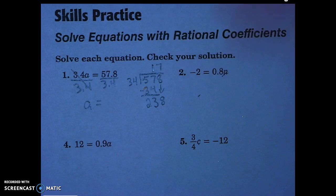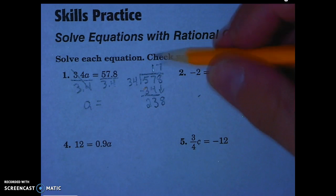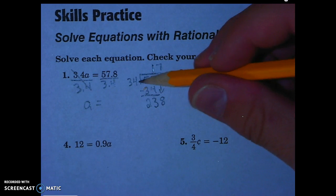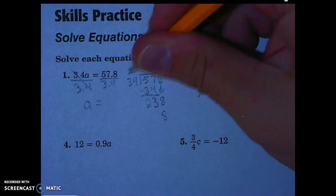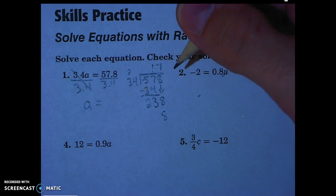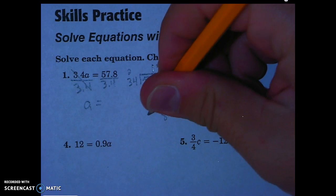Let me just check real quick. I'll write it lightly there in case I need to erase it. 7 times 4 is 28, carry the 2. 7 times 3 is 21, 22, 23. Ah, it goes into it exactly.